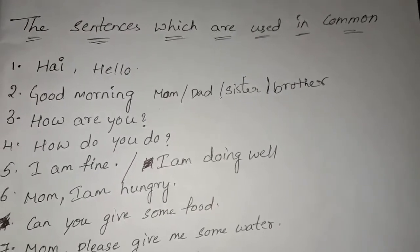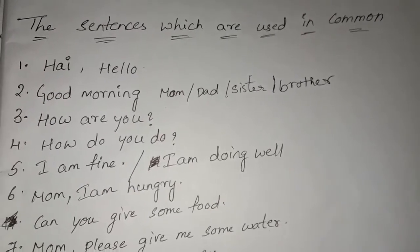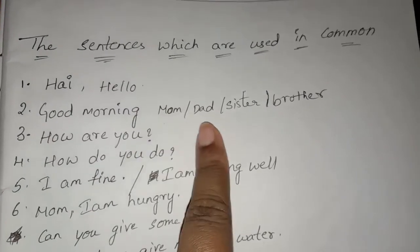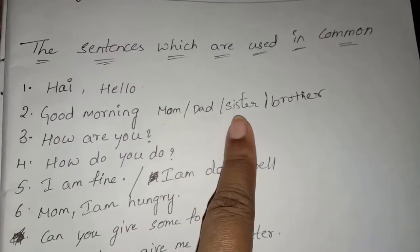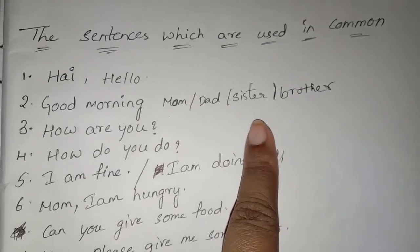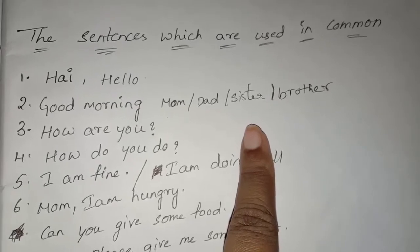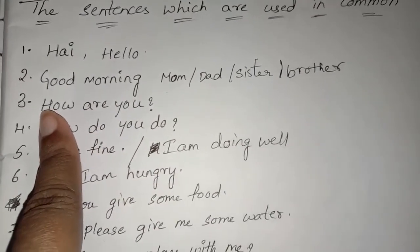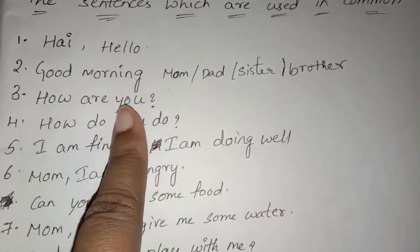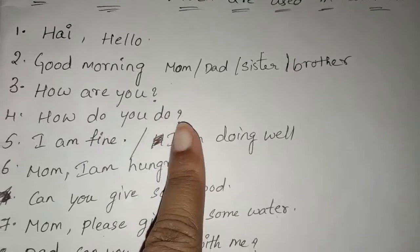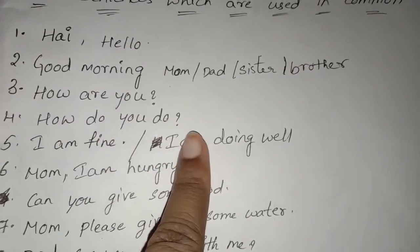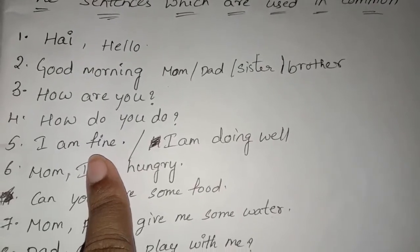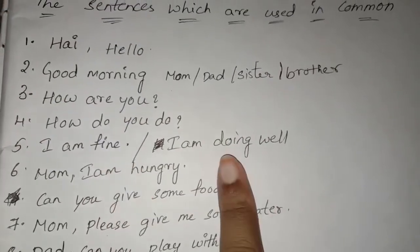Daily using these sentences will help you get English very easily. Hi, hello — you can tell hi or hello. Good morning mom, good morning dad, good morning sister, good morning brother. Nowadays many children say: Good morning bro, good morning sis — but the correct words are brother and sister. When you meet a friend after many days, ask: How are you friend? Or: How do you do? They ask you — you can tell: I am fine, or I am doing well.